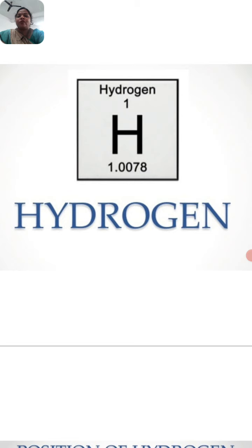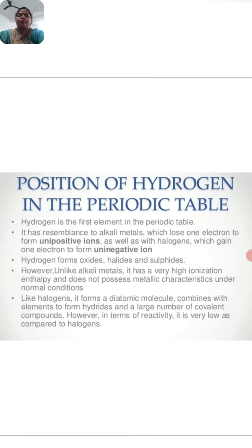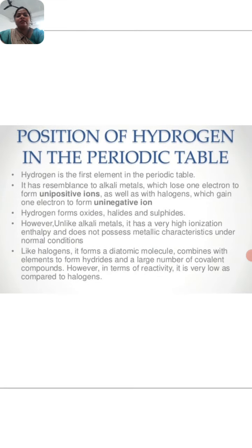The atomic number of hydrogen is 1 and the atomic mass is 1.0078. The position of the hydrogen in the periodic table. Hydrogen is the first element in the periodic table. It has a resemblance to alkali metal which loses one electron to form unipositive ions as well as with the halogens which gains one electron to form uninegative ion.